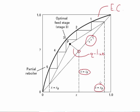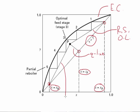At x equals xd, we have the intersection between the 45-degree line and the rectifying section operating line, with the slope given by the reflux ratio. This is the rectifying section operating line, where the slope is r over 1 plus r. And then at x equals xb, you have the intersection between the 45-degree line and the stripping section operating line, which must intersect point P defined by the intersection between the Q line and the rectifying section operating line. This then is the stripping section operating line.